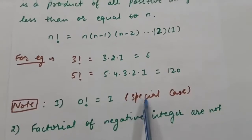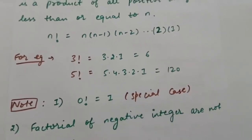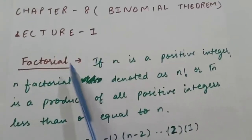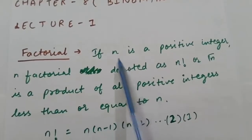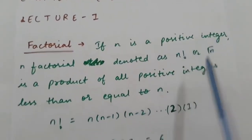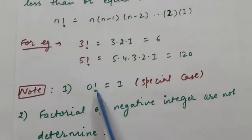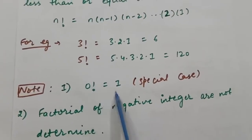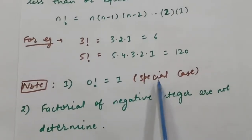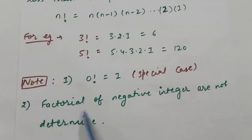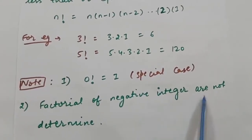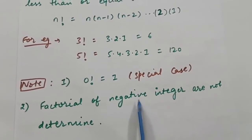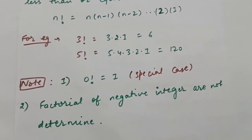Now there are some notes — this is a special case: 0 factorial is 1. Since we defined factorial for n where n is a positive integer, 0 is not a positive integer, so 0! = 1 is a special case. Also, factorials of negative integers are not determined — we cannot determine the factorials of negative integers.